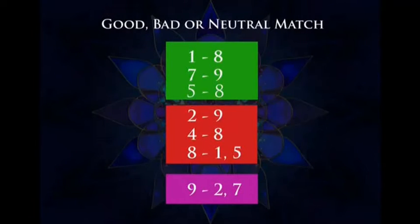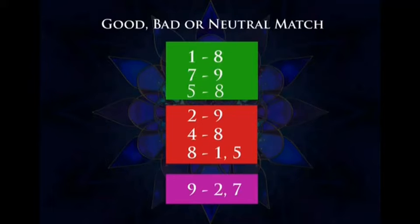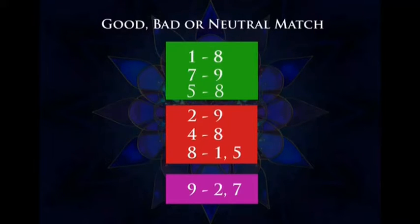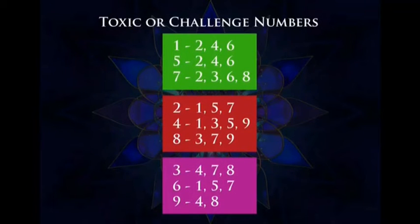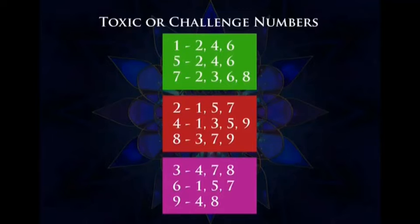On the screen there is a list again of numbers 1 to 9. Note that 3 and 6 do not feature in this list because they do not have a neutral match. This list shows numbers which can be neutral with each other — or can also be good or bad. Relationships with these numbers can go either way. So 1 with 8 can be good, bad, or neutral; 2 with 9 can also be good, bad, or neutral. Now we have the list of toxic numbers. The relationship between toxic numbers is generally very challenging and can call for a lot of compromise. As you can see, 1 is toxic with 2, 4, and 6; 5 is toxic with 2, 4, and 6; 7 is toxic with 2, 3, 6, and 8; and so on.